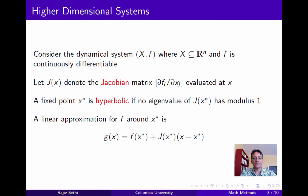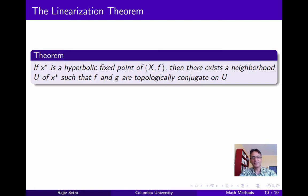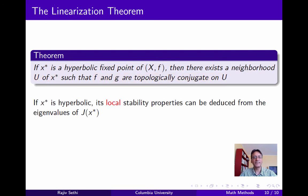A linear approximation for f around x-star is given by g(x) as shown, excluding terms that are second order or higher in the difference between x and x-star. Here's the main result, which I'll state without proof: if x-star is a hyperbolic fixed point of the dynamical system (x, f), then there exists a neighborhood u of x-star such that f and g are topologically conjugate on u. Since g is a linear approximation, its stability properties depend on the eigenvalues of J(x-star). The fixed point x-star in the linear approximation will be globally asymptotically stable if all eigenvalues of J(x-star) lie within the unit disc. And what this theorem says is that if all eigenvalues lie in the interior of the unit disc, then x-star is locally asymptotically stable even in the nonlinear system. Furthermore, if one or more eigenvalues lie outside the unit disc, then x-star is unstable in the nonlinear system.